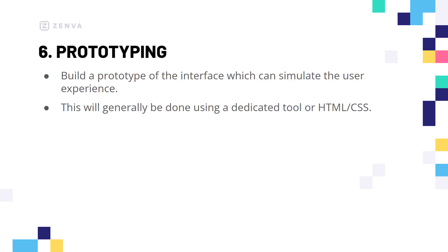Then on to step six we have prototyping. This is where we actually develop a very simple prototype of our app. This isn't generally going to be done in your final software of choice, but generally using a dedicated prototyping tool, or it can be done in HTML and CSS — you can just create a basic website that looks like your app and has all the interactions. So when you click on a button that takes you to the next page, when you scroll the mouse wheel that moves up and down. This is just so we can get an overview and a general flow of how the interface is going to work.